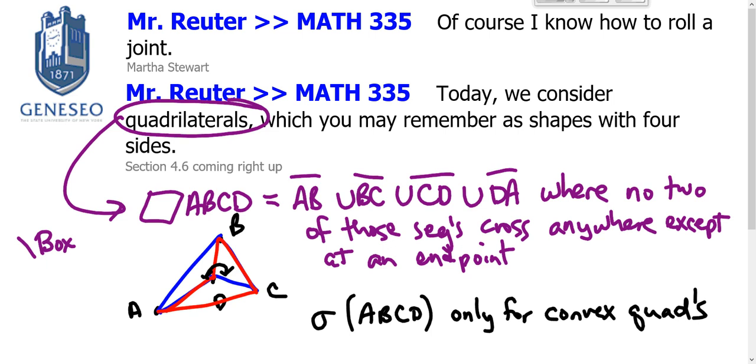Opposite sides of quadrilaterals: AB and CD are called opposite sides, BC and AD are called opposite sides in quadrilateral ABCD. Those are all vocabulary that you should be familiar with from your previous work.